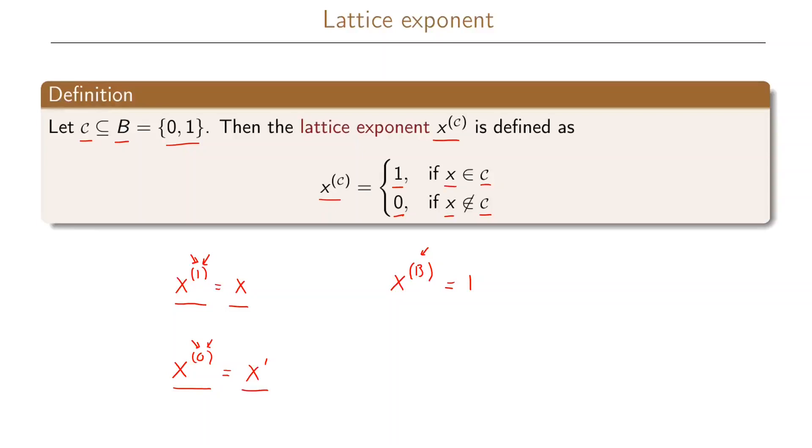The lattice exponent with the empty set will always take the value 0, because regardless if x is 0 or 1, this 0 or 1 will never belong to the empty set, so we always have a 0.